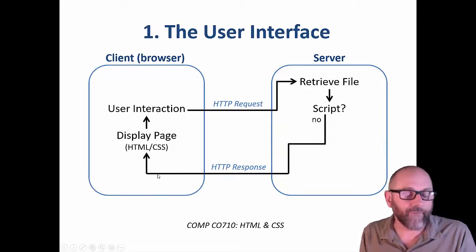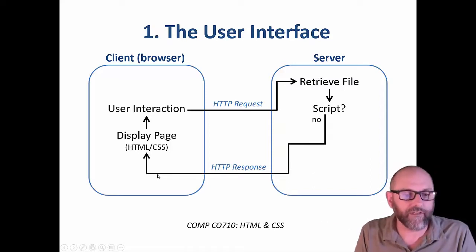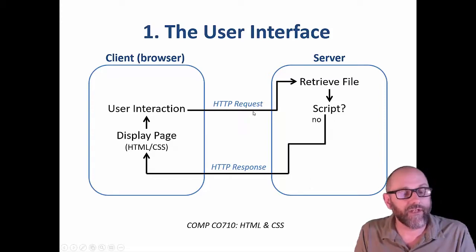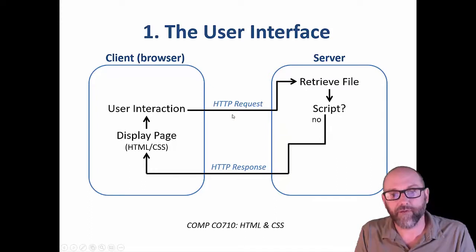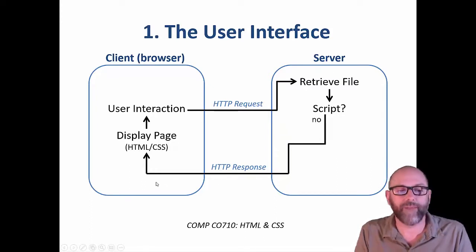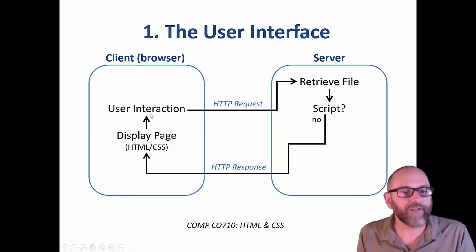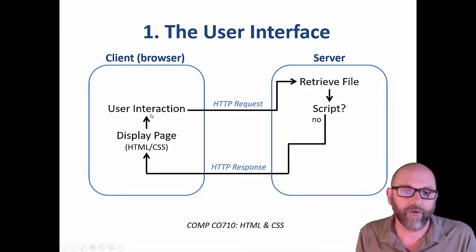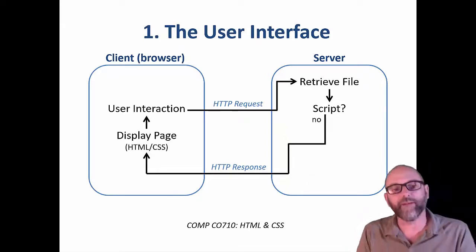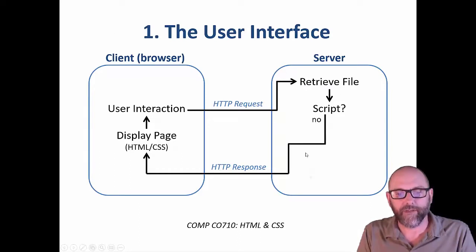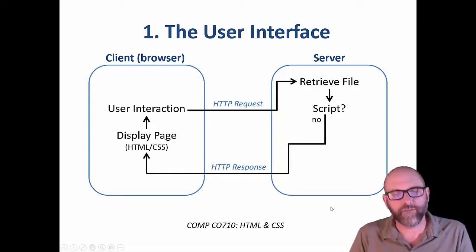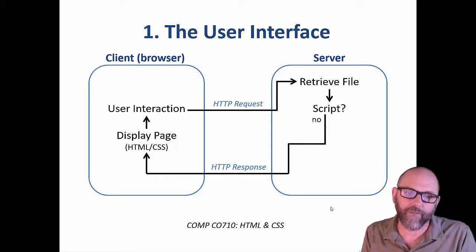The client browser unpacks the response, retrieves the contents of index.html, and displays it. At this point it may initiate new requests — if the page requires a CSS file, it sends a request for that CSS file and the server sends back an HTTP response with its contents. When the page is rendered, the user interacts with it, eventually clicks a link or submits a form, and initiates another HTTP request. So these are not web apps — this is just flat web pages like you made in your first web course.